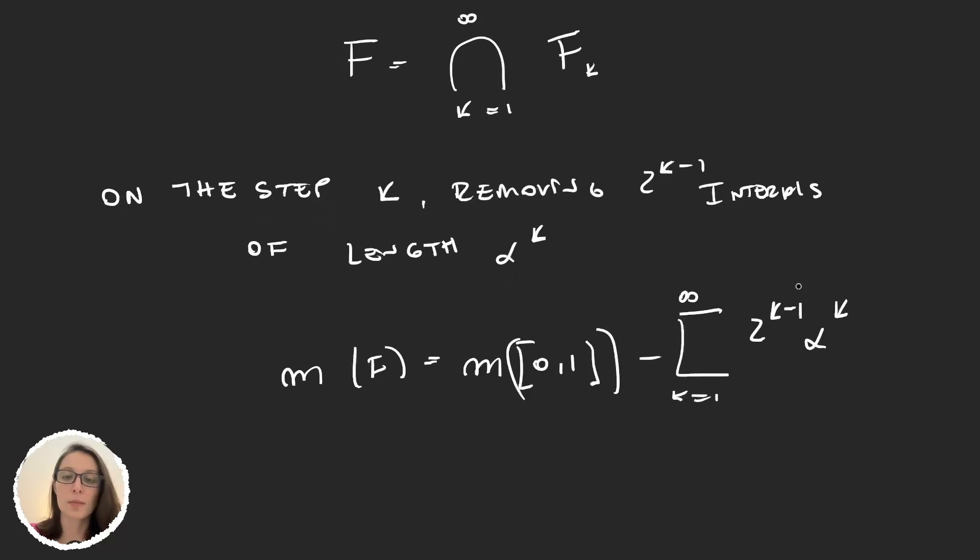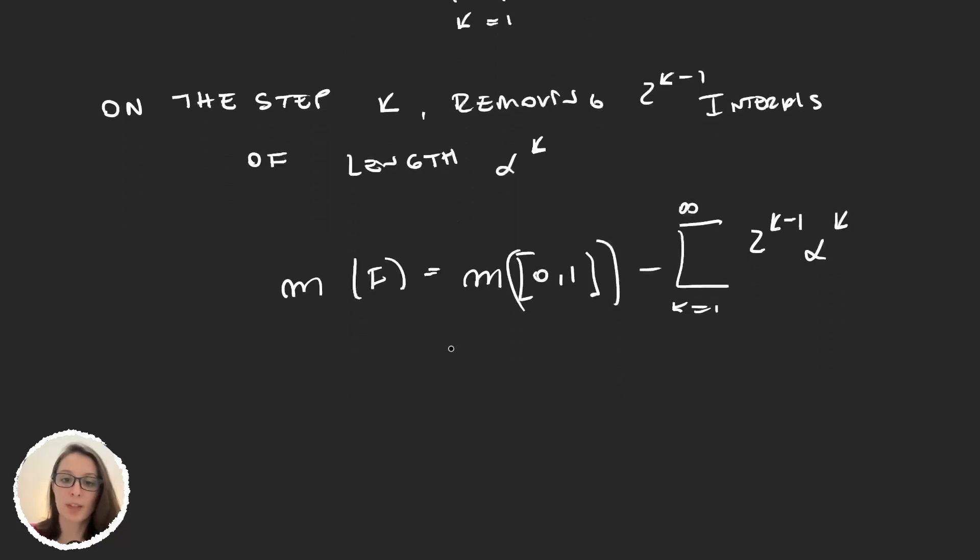So let's see if we can make this sum a bit better. The measure of [0,1] is 1. And I can just take a common factor α and say this is α times the sum from k equals 1 up to infinity of 2α to the power of k minus 1.